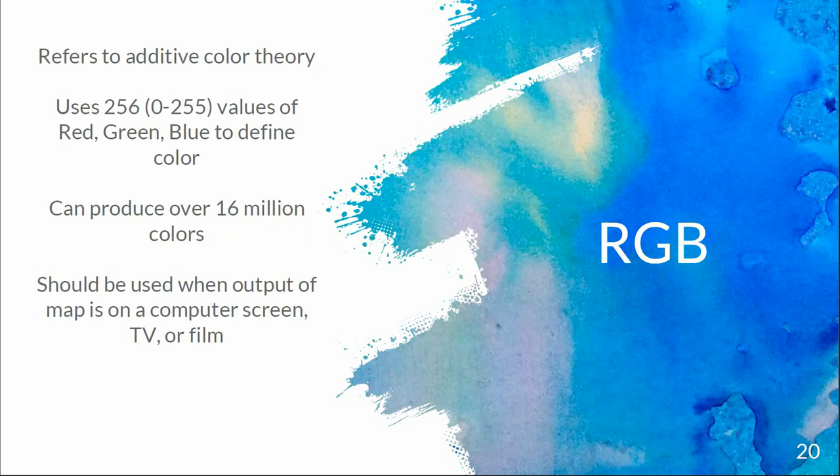RGB is probably the most common color model. It refers to additive color theory and uses 256 values of red, green, and blue — ranging from 0 to 255 — to define color. This model can produce over 16 million colors. It's typically used when the output of maps is going to be on a computer screen, TV, or film. When we're printing, not so much — but anything on a screen or captured via film is going to use RGB.